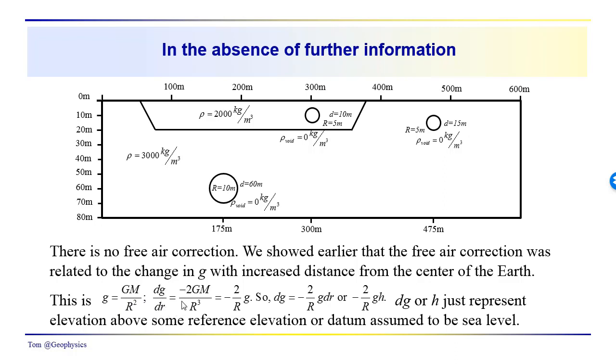This gives us minus 2gM over R cubed, and this would be equal to minus 2 over R times g.